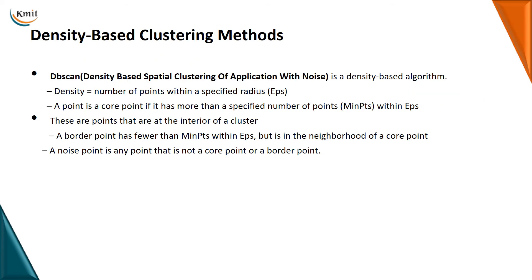DB scan stands for Density Based Spatial Clustering of Applications with Noise. It's a density-based algorithm. Here we are going to use two things: one is epsilon and one is minimum points. Epsilon is the radius of the circle we draw. The point where we have the radius is called epsilon.